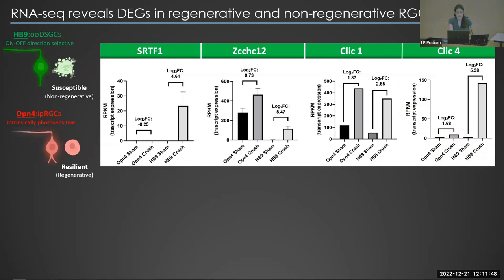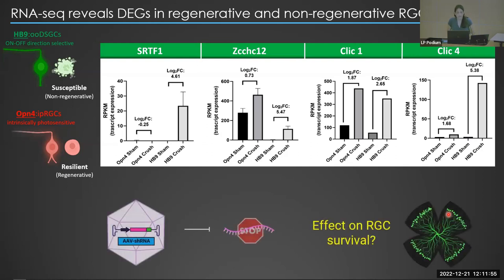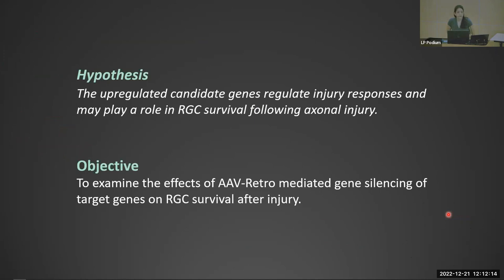Based on this analysis, we wondered if we were able to silence these genes, could they have an effect on retinal ganglion cell survival? I've currently performed knockdowns of SRTF1 and ZCCHC12, which are transcription factors whose roles in cell survival and regeneration remain unknown. My hypothesis is that these upregulated candidate genes regulate injury responses and may play a role in retinal ganglion cell survival following axonal injury. My objective is to examine the effects of AAV retro-mediated gene silencing of target genes on RGC survival after injury.